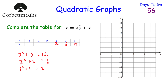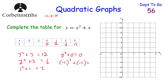When x equals 0, we do 0 squared plus 0, which equals 0. For x equals negative 1, we do negative 1 squared plus negative 1. Negative 1 squared is negative 1 times negative 1 — a negative times a negative is a positive — so that's 1. Then adding negative 1 means going down 1, so 1 plus negative 1 equals 0.